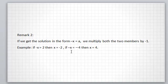And if we get minus x equal minus 4, then x equal to 4, because minus x times minus 1 equals minus 4 times minus 1.